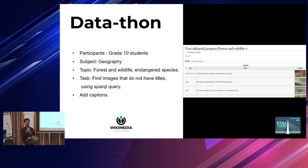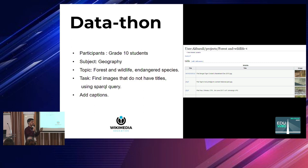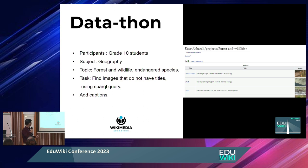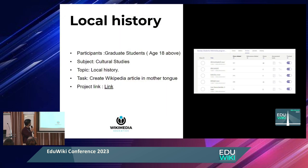We also ran a Datathon. There were many images in Wikimedia Commons without titles or descriptions. We collected images of Nelson Mandela, Adolf Hitler, and Mahatma Gandhi — related to their history topics — and images of endangered species like tigers for geography topics, all lacking captions and file names. Students opened these images and described them, providing titles and captions.